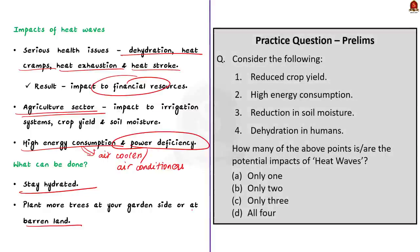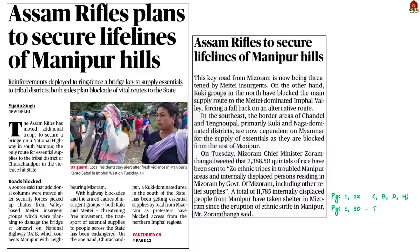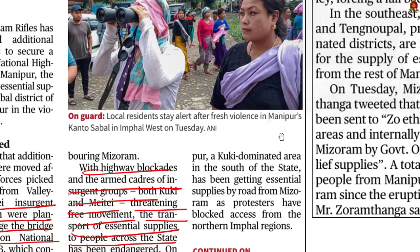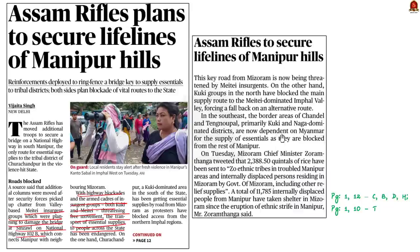Currently, violence is going on between the Meitei and Kuki people in Manipur. Because of this violence, the highways in Manipur were blocked by armed cadres of both groups, threatening the free movement of people and affecting the transport of essential supplies across the state. Recently, messages circulated that Meitei insurgent groups were planning to damage the bridge on National Highway 102B in South Manipur, which connects Manipur with the neighbouring Mizoram. Due to this threatening message, the Assam Rifles have moved additional troops to secure the bridge.